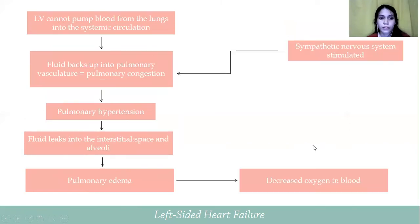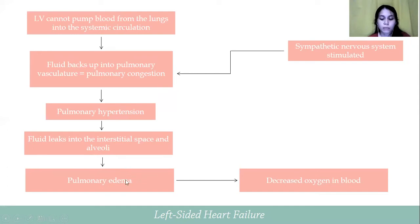When the left ventricle cannot effectively pump blood into the systemic circulation, pulmonary congestion occurs, which later on leads to pulmonary hypertension. Blood leaks into the interstitial space and alveoli, resulting in pulmonary edema. Oxygen in blood also decreases as heart failure progresses.